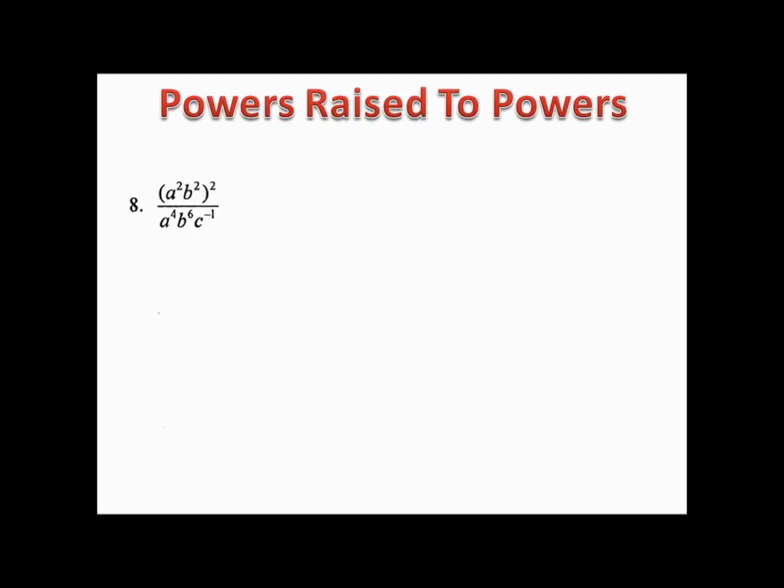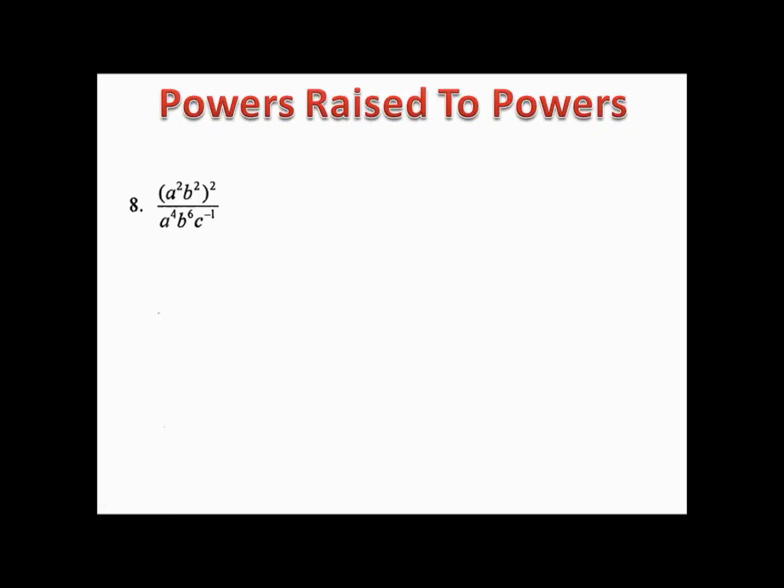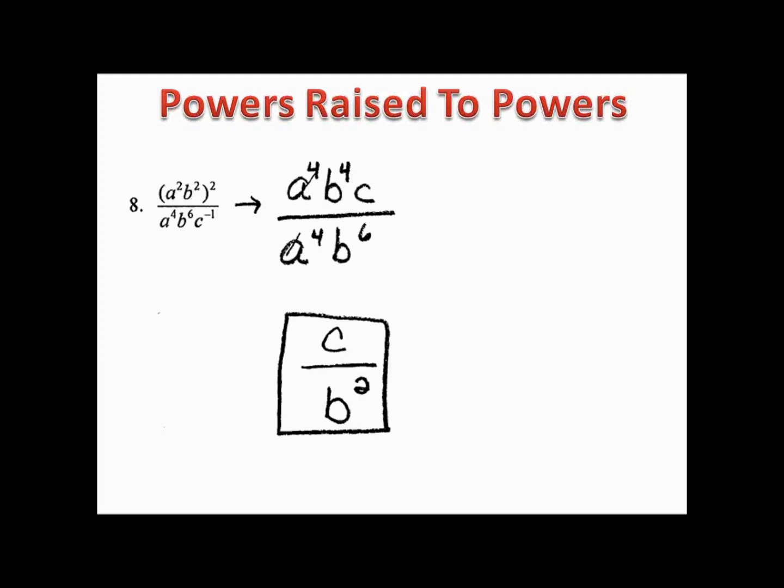Example eight involves distributing and also moving a variable up from the denominator. In the numerator, we multiply each exponent by the 2 on the outside, giving us a⁴b⁴. We also had a c⁻¹ in the denominator which we brought up. In the denominator we have a⁴b⁶. Applying division rules, we end up with c over b².